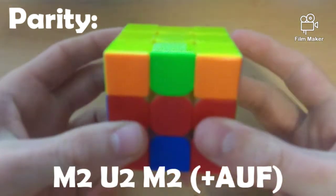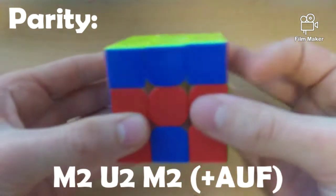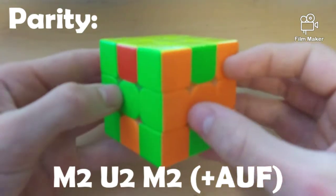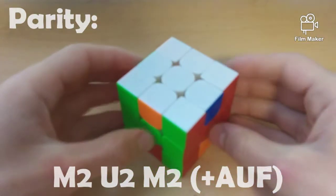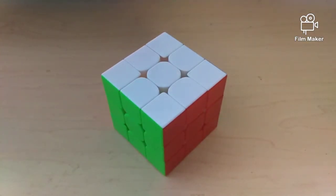So, this parity algorithm goes as shown. M2, U2, M2. And you can also add any AUF you need to. And now you can see, they are just normal algorithms to solve these layers. So, with the basic knowledge of this method out of the way, I will now move on to how this method actually works.